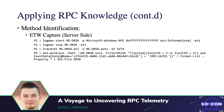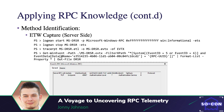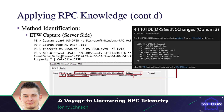Next was method identification. I already knew DRS GetNC Changes was used, but I wanted to identify any other methods and what they looked like on the server side. I used ETW — Event Tracing for Windows — to do this, learned from Matt Graber. I did an event trace, performed the attack, and from the capture I could see the op num, which directly correlates with the method. Going to Microsoft documentation confirms that DRS GetNC Changes matches that op num.